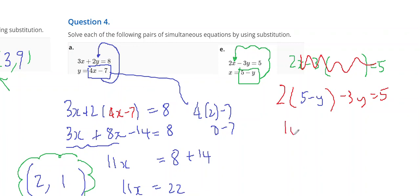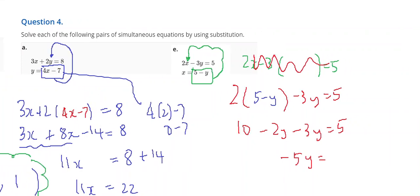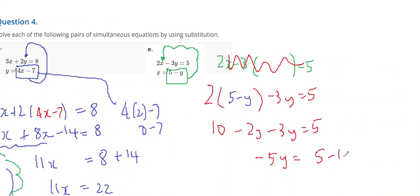So, multiplying this out, I get 10 minus 2y minus 3y equals 5. Add the y's together, give me minus 5y. And at the same time, move the 10 to the other side. 5 minus 10.